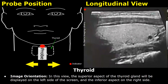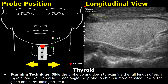In this view, the superior aspect of the thyroid gland will be displayed on the left side of the screen, and the inferior aspect is seen on the right side. These hypoechoic areas are the strap muscles. Slide left and right to examine each thyroid lobe individually in the longitudinal plane, and you can also slide up and down to examine the full length of each lobe.